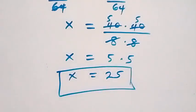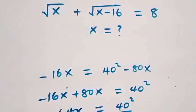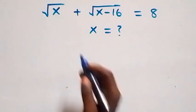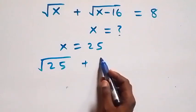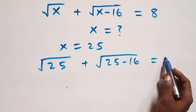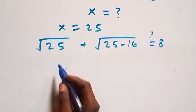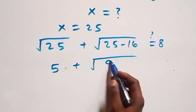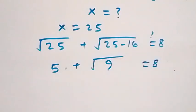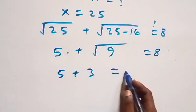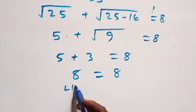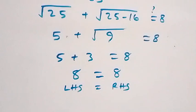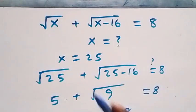Let's check: substitute x = 25 into the original equation. We get √25 + √(25 - 16) = 8, which is √25 + √9 = 5 + 3 = 8. That equals 8 on the right-hand side. Left-hand side equals right-hand side, so x = 25 satisfies the given problem.